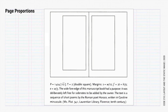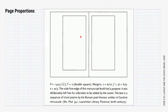Let's take a look at an example. In this example, we can see the page proportion is 1 to root 2, so 1 to 1.414. The text block inside is a double square, so 2 to 1. The inner margin is equal to the top margin, which is one ninth of the page's height. The footer margin is twice the height of the header margin. The outer margin is one third of the page's width, the large width being very deliberate so that the reader could add their own notes.